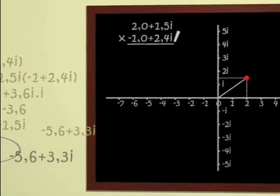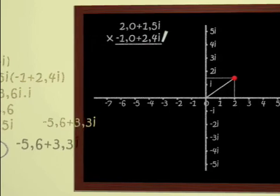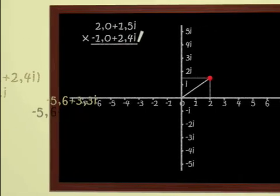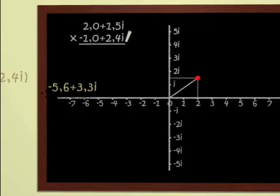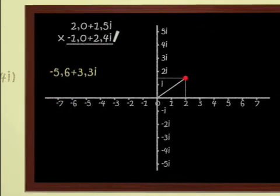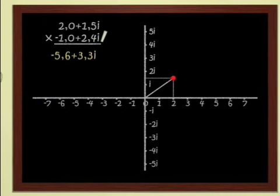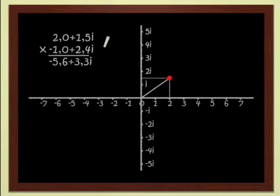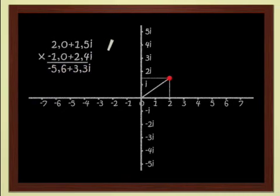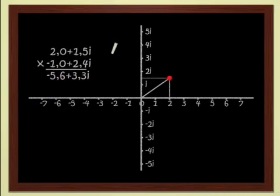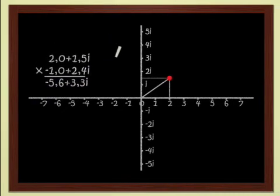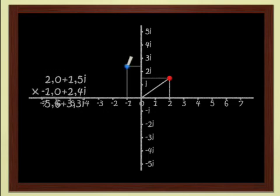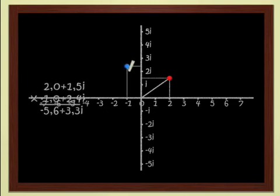We thought that the plane was dimension 2, since two numbers are necessary to locate a point. And now I'm telling you that one number is enough. Of course, we changed our numbers, and now we are dealing with complex numbers.